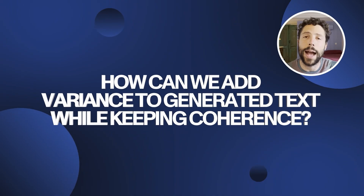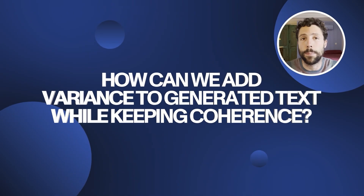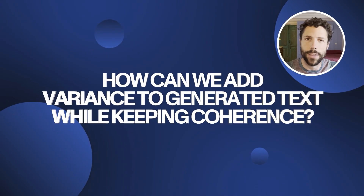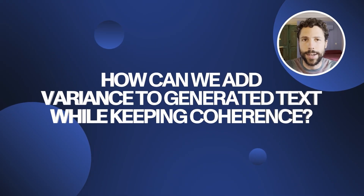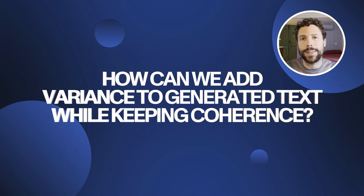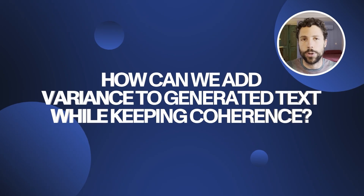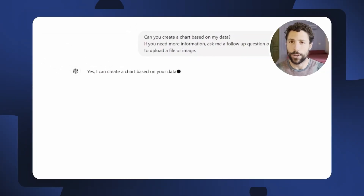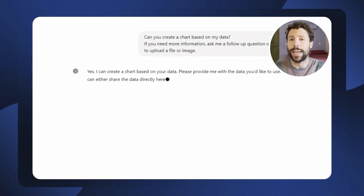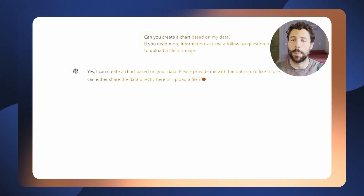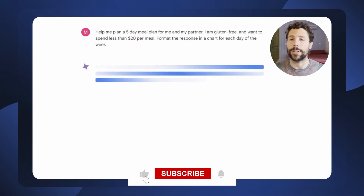The natural question is: how can we introduce more variance and unpredictability into generated text while still maintaining coherence and high likelihood? It turns out that an essential step is to introduce some degree of randomness into the decoding process. This leads to so-called stochastic methods for text generation.